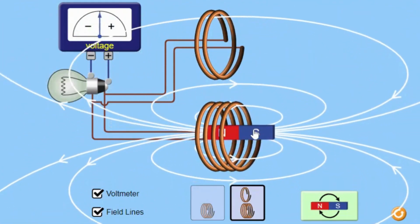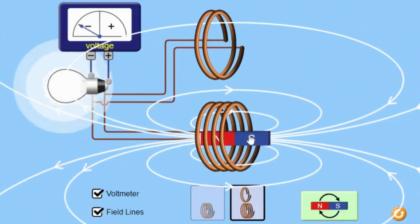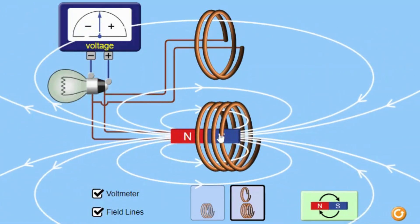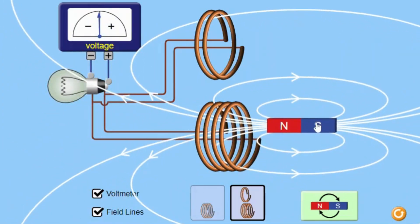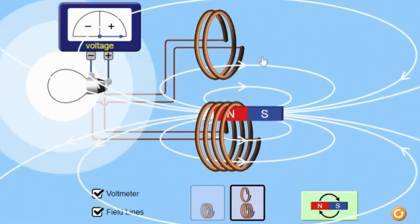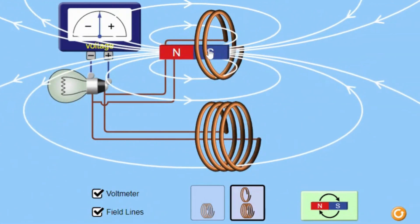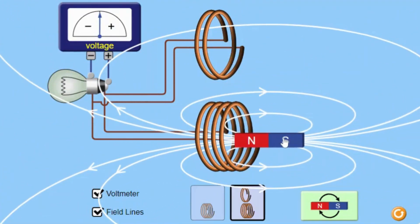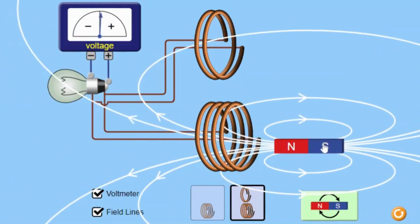Students can experiment with different numbers of coil turns and magnet speeds and observe the resulting changes in the brightness of the bulb. This exploratory approach encourages critical thinking and problem-solving skills. The simulation provides a practical application of Faraday's Law of Induction, which is a fundamental principle in many real-world technologies such as electric generators, transformers, and induction motors, helping students see the relevance of these concepts in everyday life.